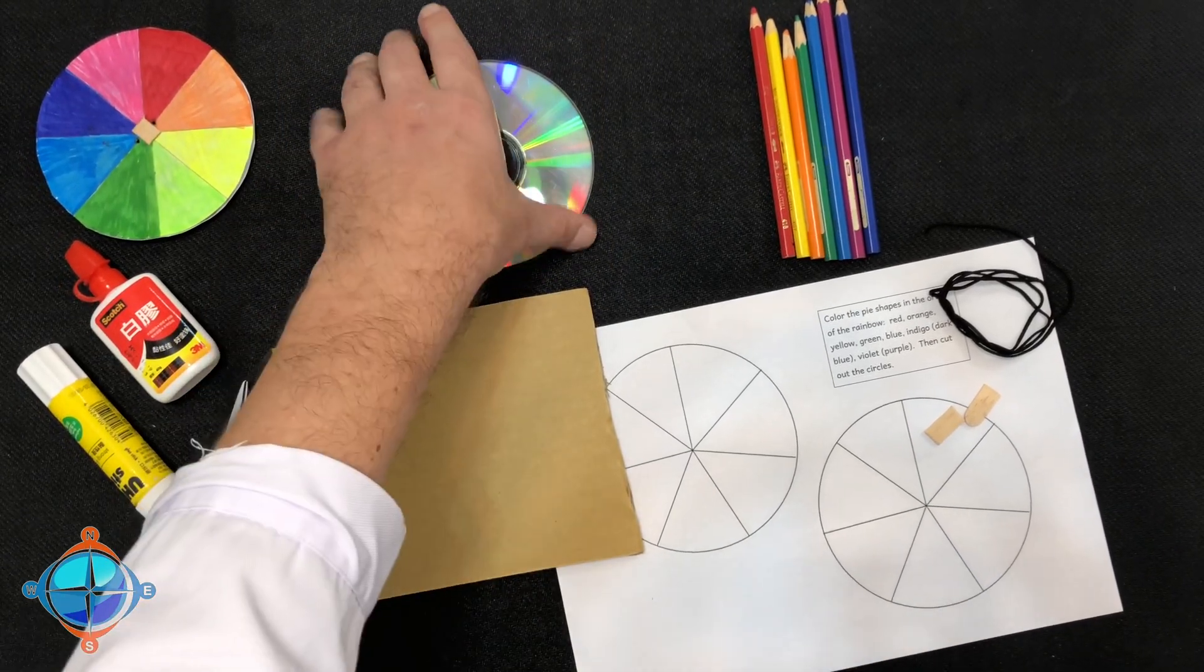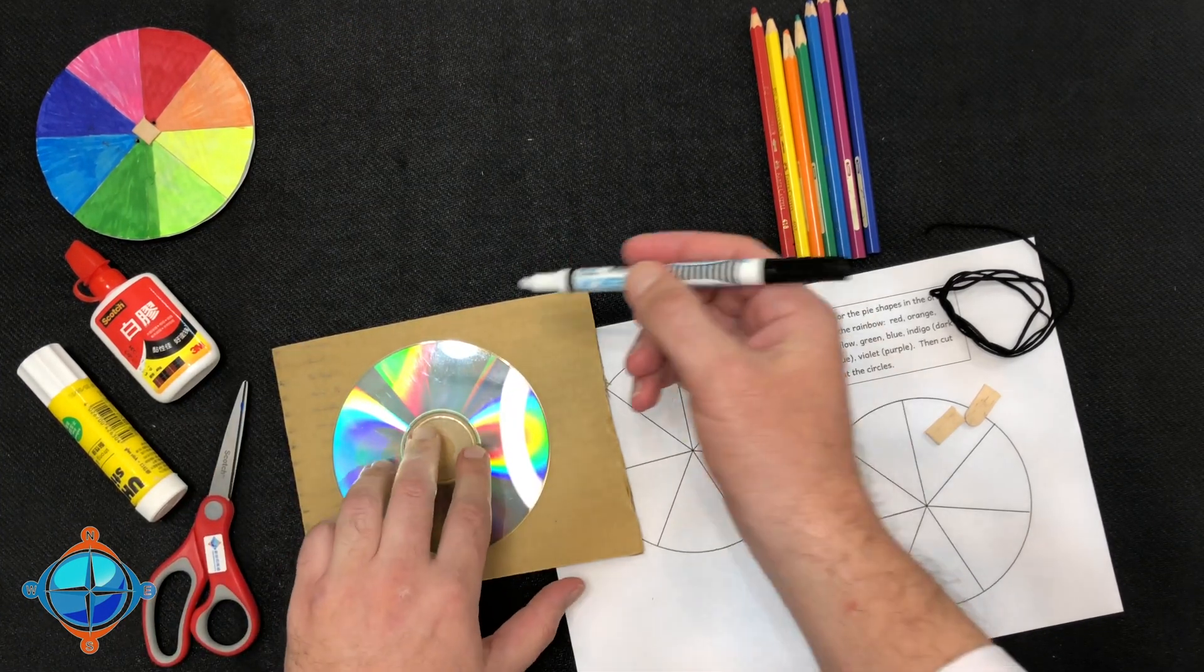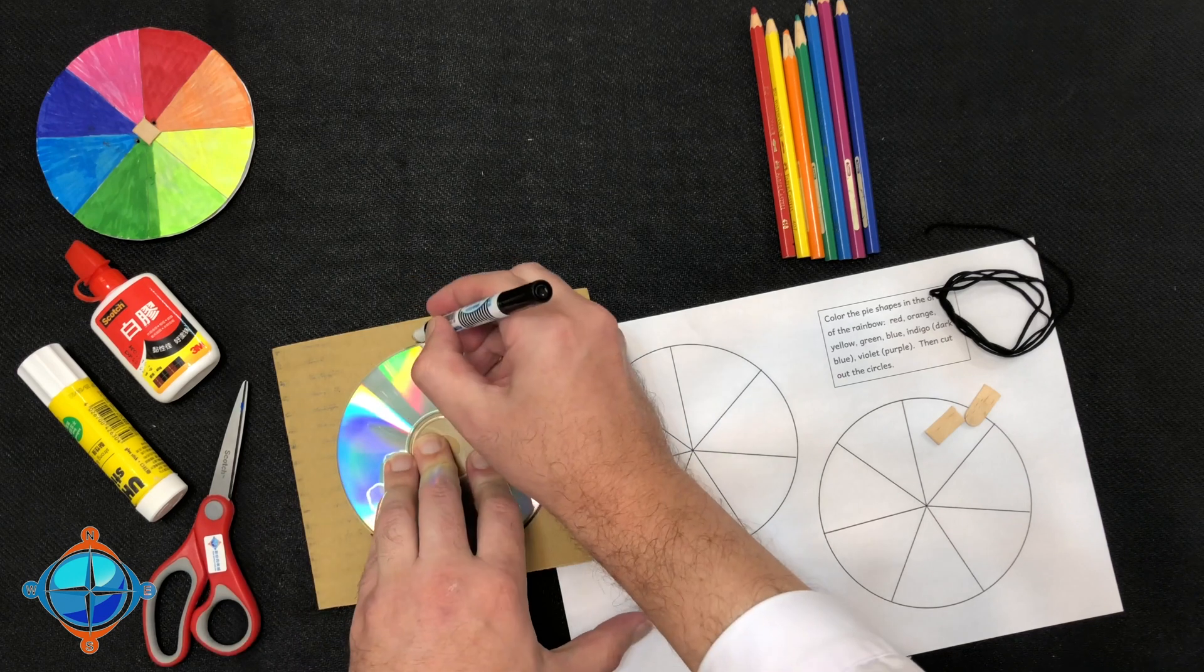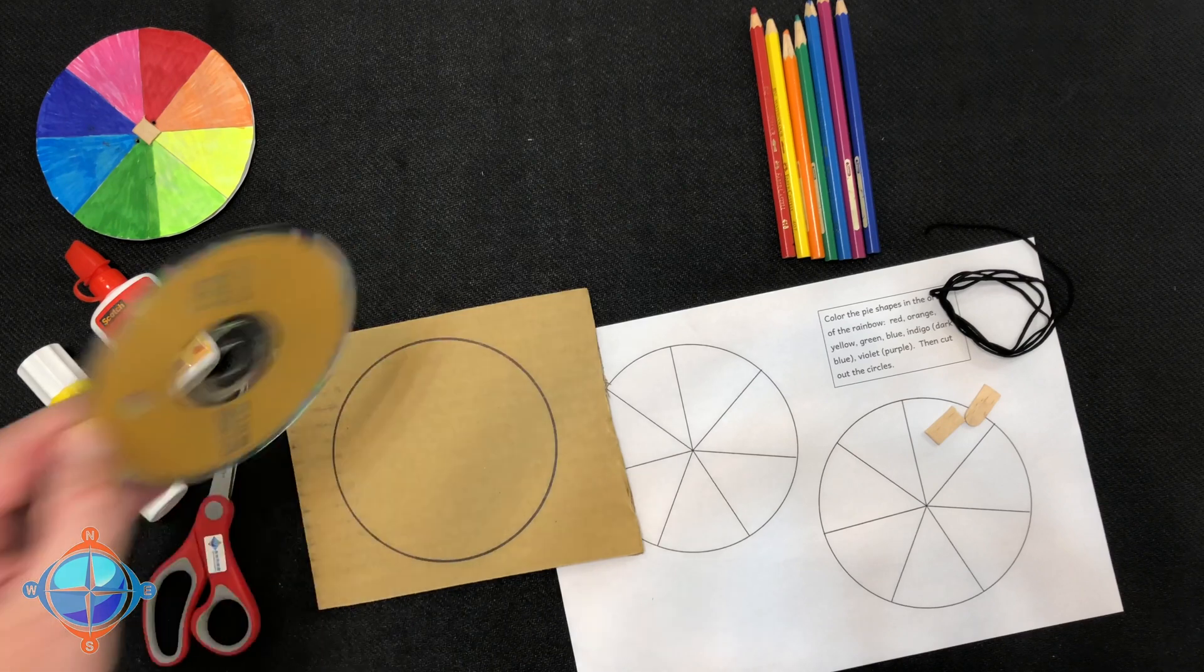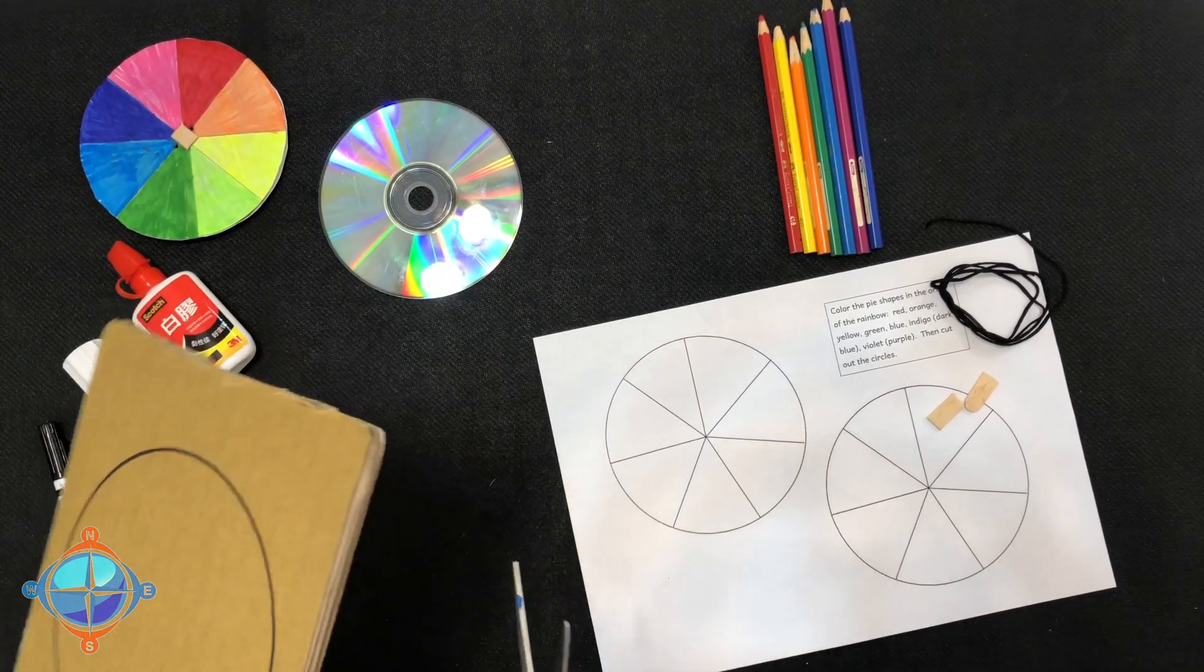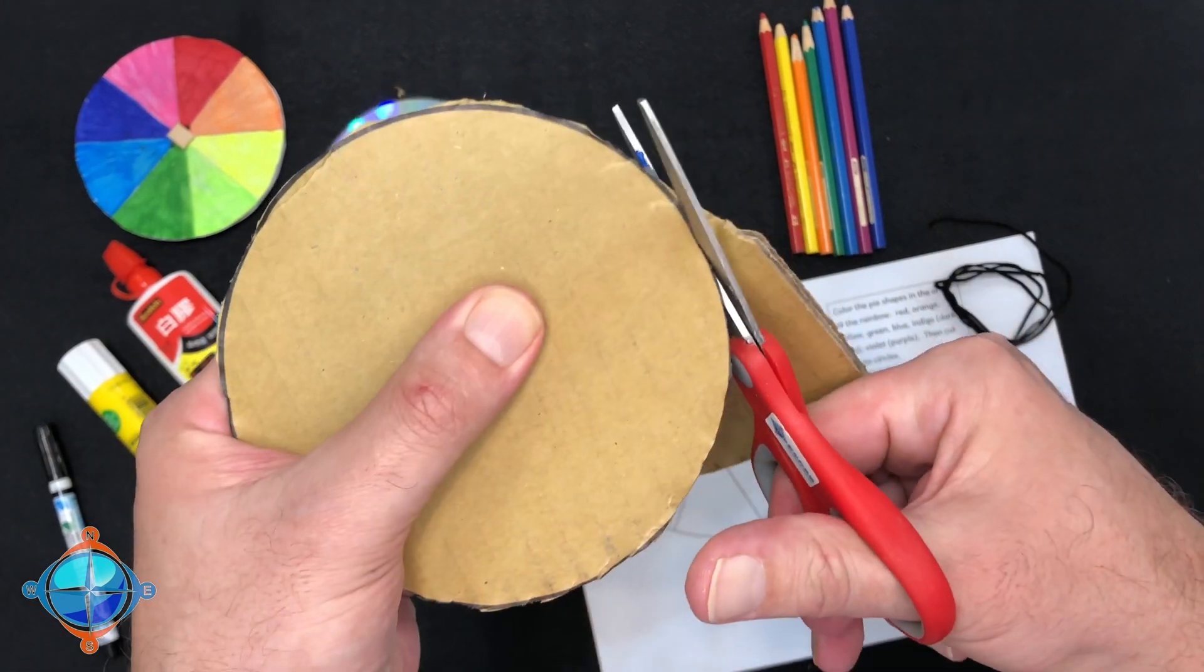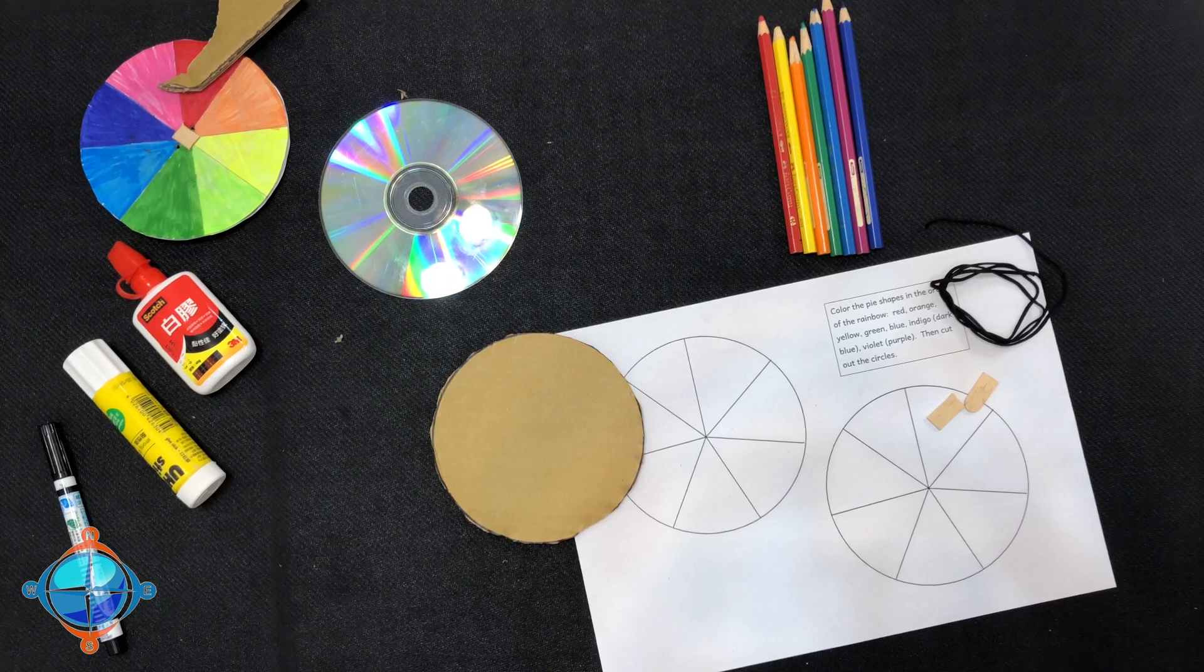Now, you need to put your CD on the cardboard and trace very carefully. Then you need to take your scissors and cut it out. Just like that. Oh yeah!